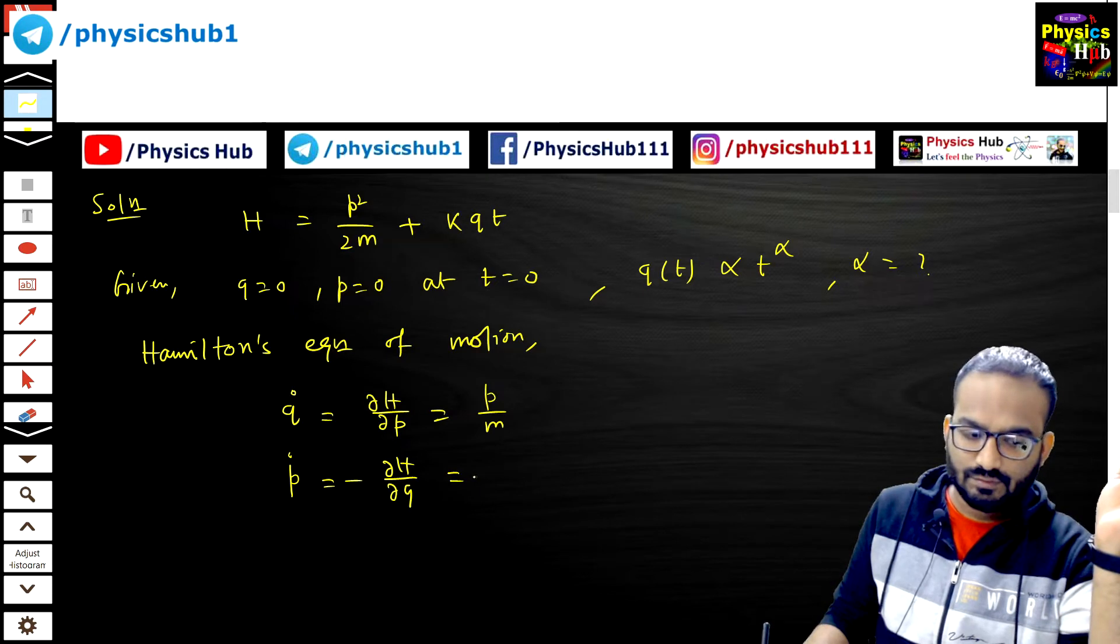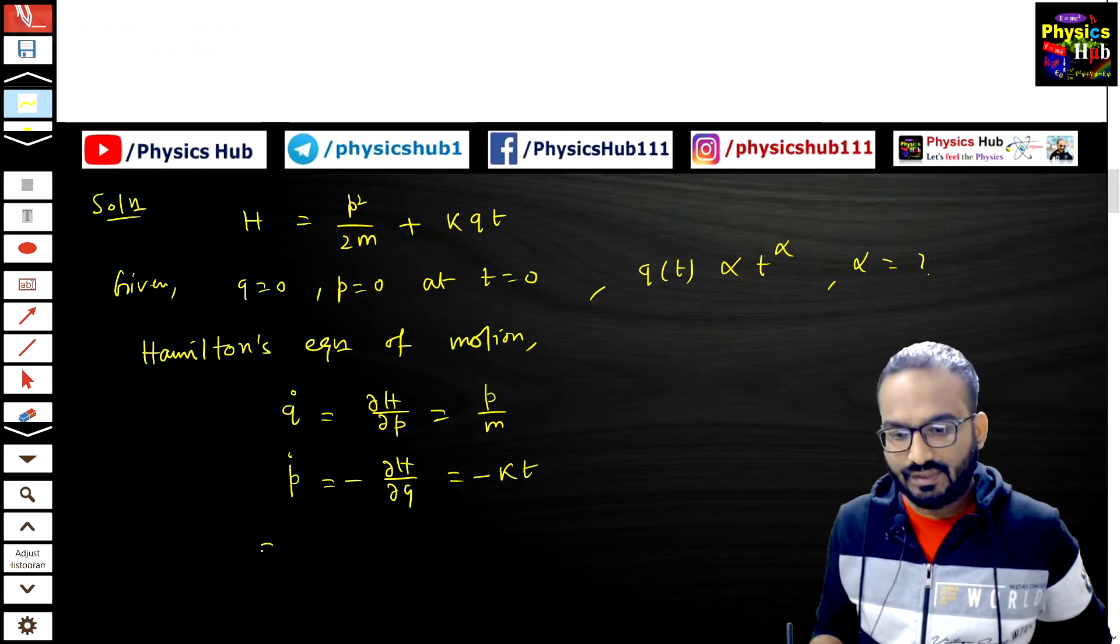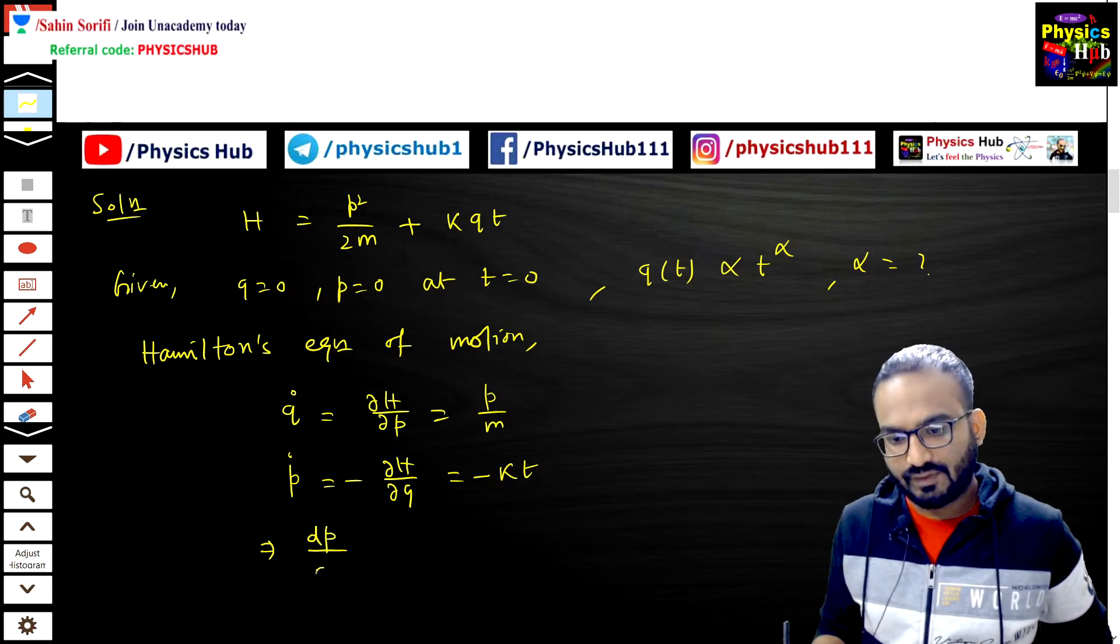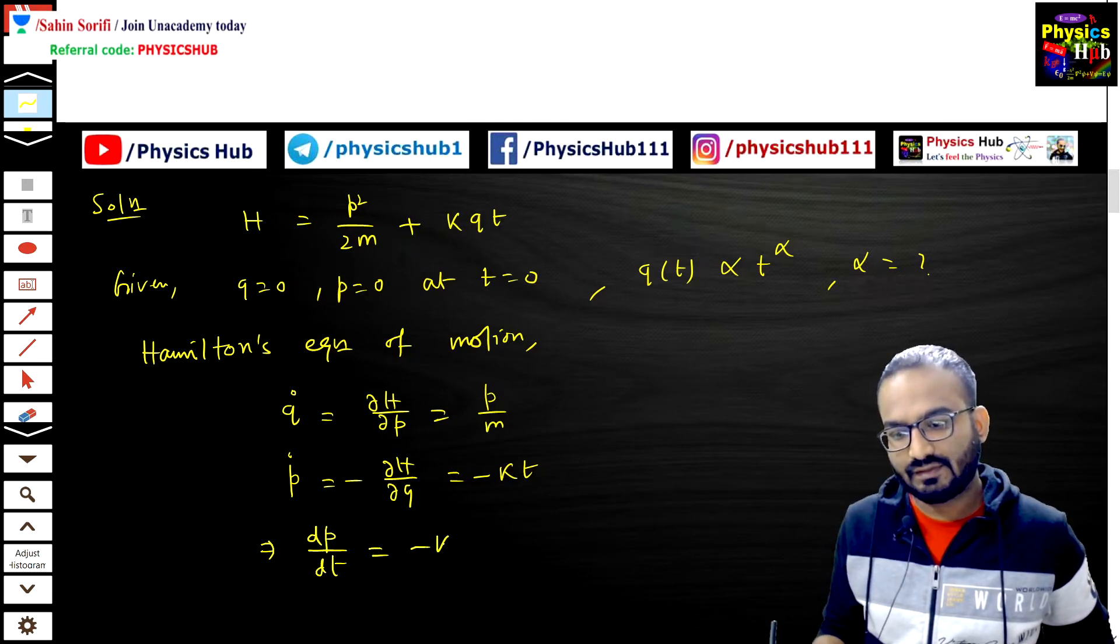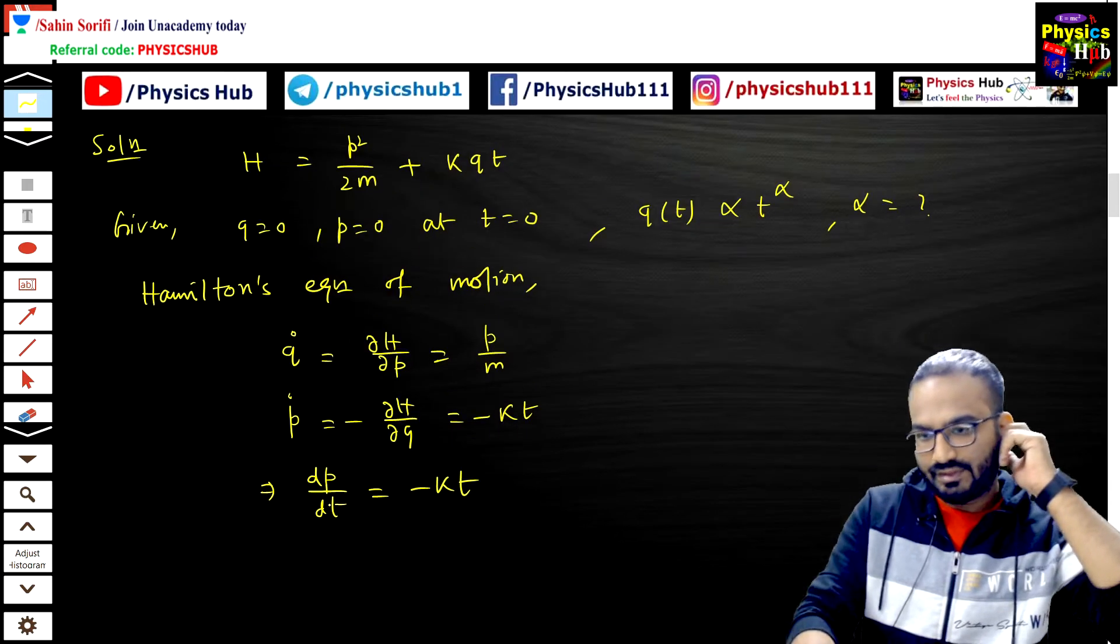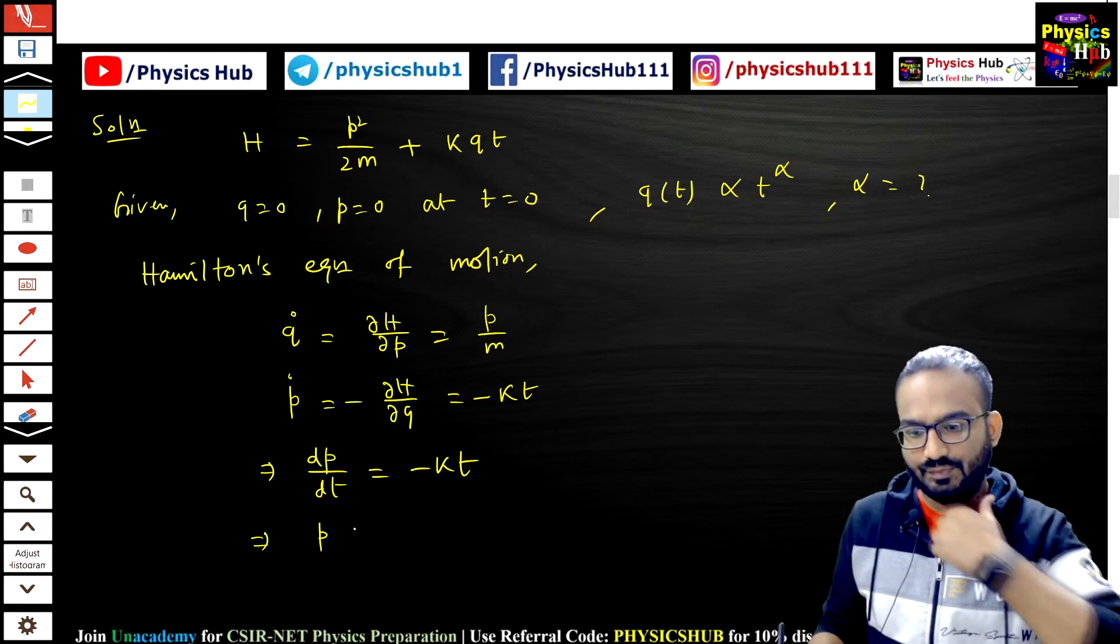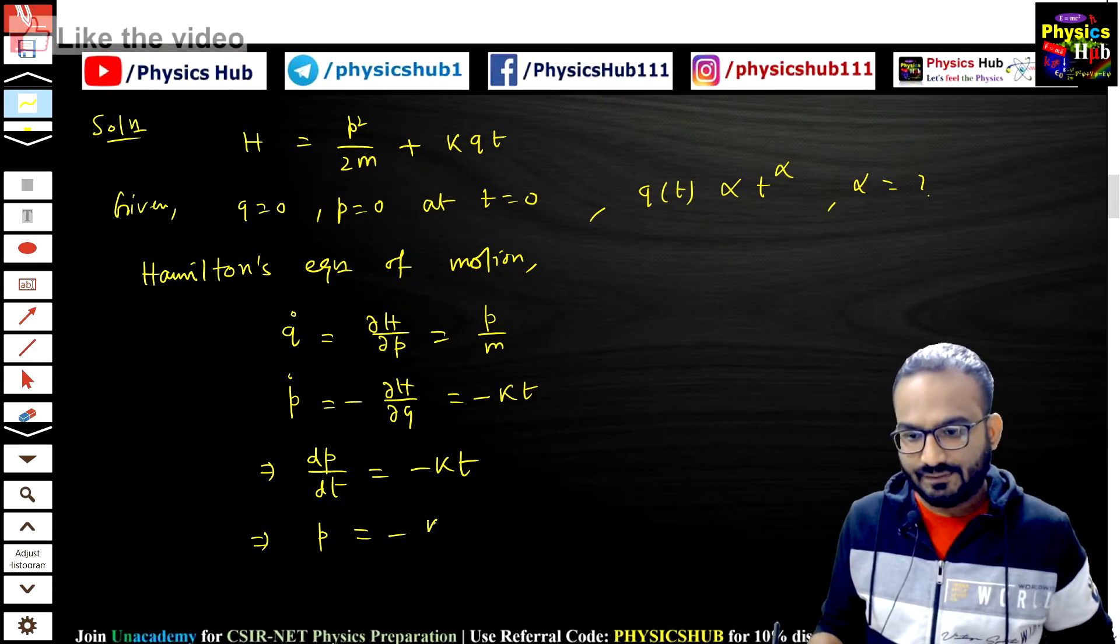So p dot equals minus kt. From here you can find out dp dt equals minus kt. So q of t is depending on p, so that is how we need to evaluate p first.